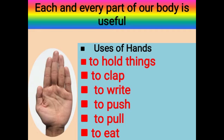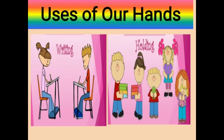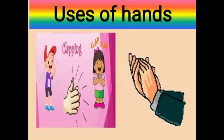Children, each and every part of our body is very, very useful — whether it is the hand, leg, neck, or any other part. All these play an important role in our body. Let's learn about the uses of hands. Hands help us to hold things, to clap at different occasions, to write letters and many other things, to push or pull things, and to eat or pick up food. As in the picture you can see, we use hands for writing, to hold books, toys, flowers, and many other things. Hands are also used for clapping.